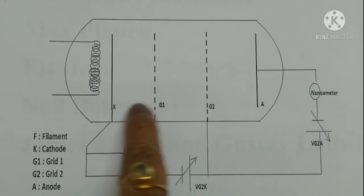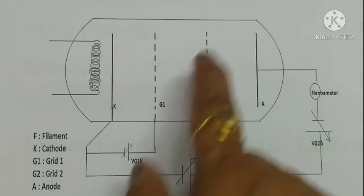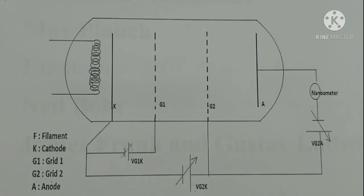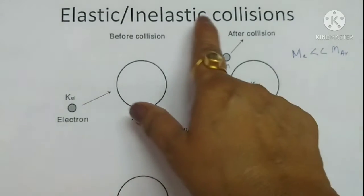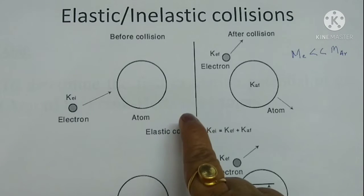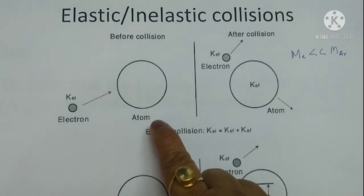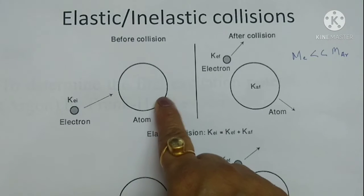While electrons are moving from cathode to anode, they collide with argon atoms inside the tube. This collision may be elastic or inelastic in nature depending upon the energy of the electrons. If energy of the electron is less than the excitation potential of argon, which is around 11.83 electron volts, it collides with the argon gas atoms elastically.